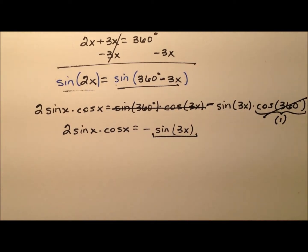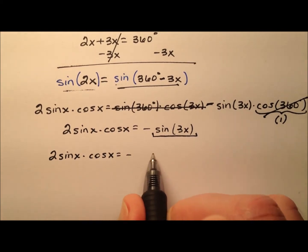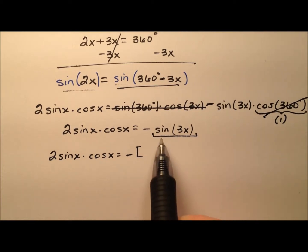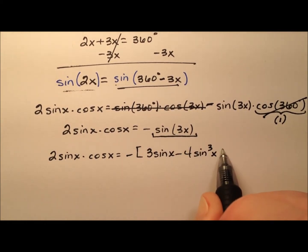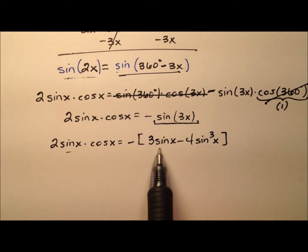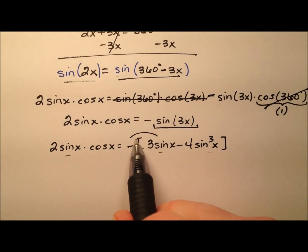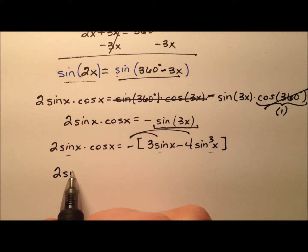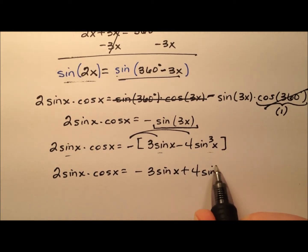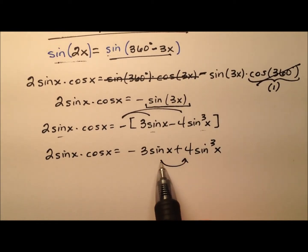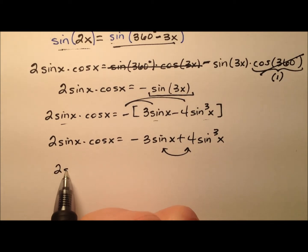I have the triple angle identity for sine, so I can expand that side as well. My left side stays the same, and the right side is the negative of the triple angle identity for sine: 3 sine x minus 4 sine cubed x. I have sines all over the place, and that's really good because we're trying to solve for sine x, where x is 72 degrees. Distributing that negative through gives 2 sine x cosine x equals 4 sine cubed x minus 3 sine x. I'm switching those two terms so the negative appears as a minus in the middle of the expression.